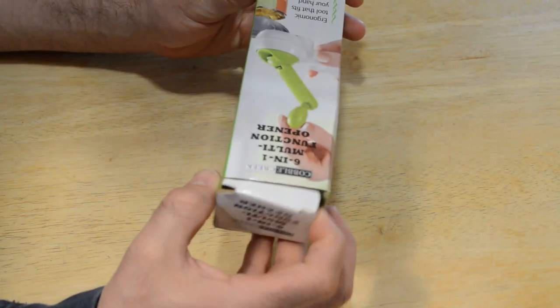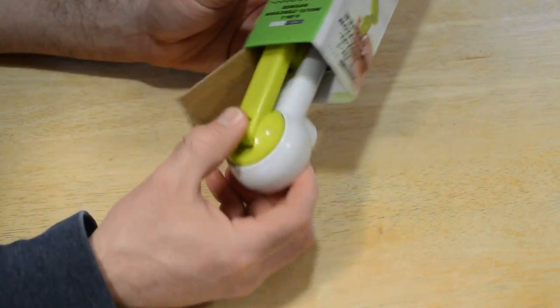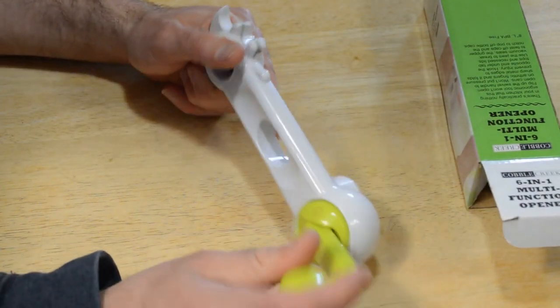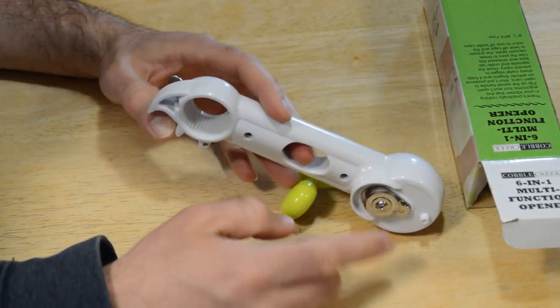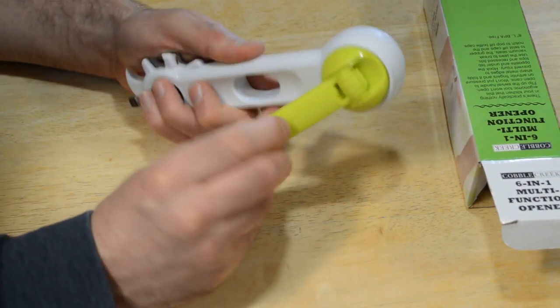All right, so let's open it up, see what's inside here. And yeah, look at this thing. So just completely all plastic, except for the metal opener. And yeah, let's test it out.